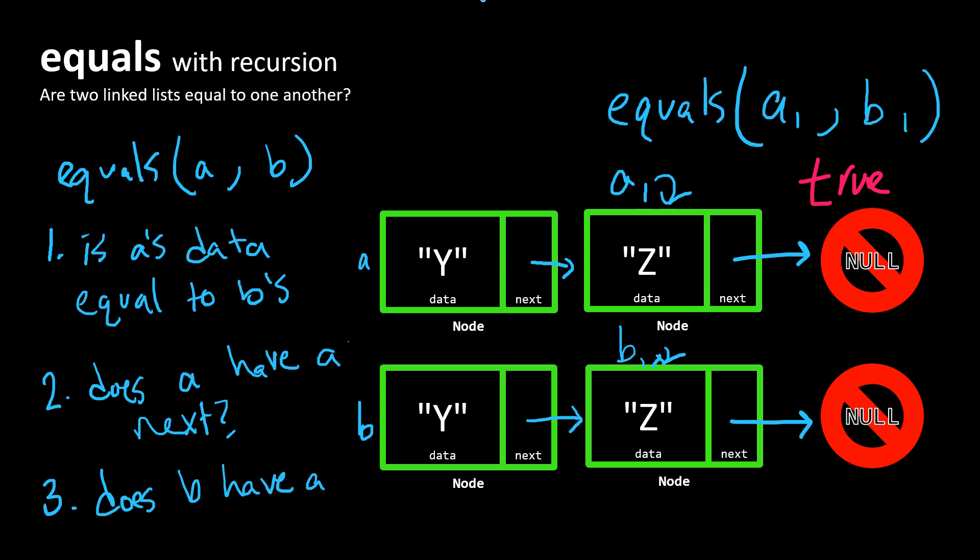If these three conditions are met, then we are going to recursively call equals with A dot next and B dot next.